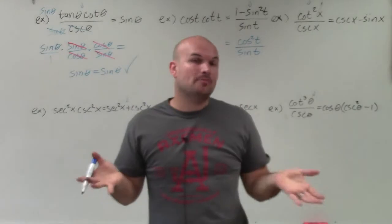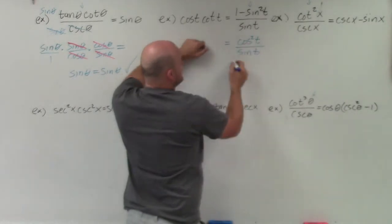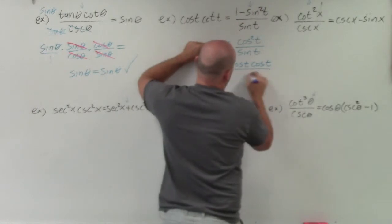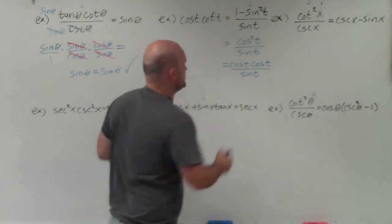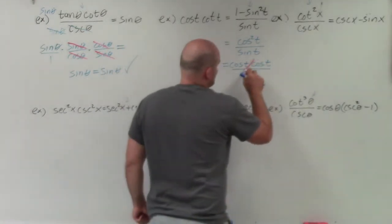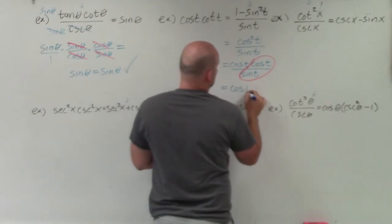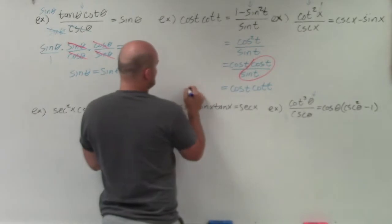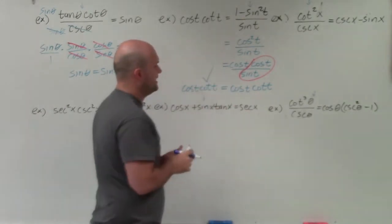That still doesn't quite look like the left side because it's still a fraction. However, I can rewrite cosine squared of t as cosine of t times cosine of t, all over sine of t. Then, by grouping cosine of t over sine of t, that equals cotangent of t. So therefore I have cosine of t times cotangent of t — which is exactly what we have on the left side. Now it has been verified.